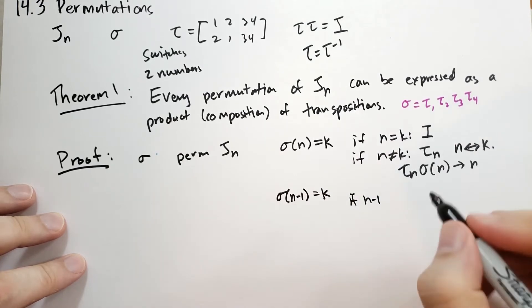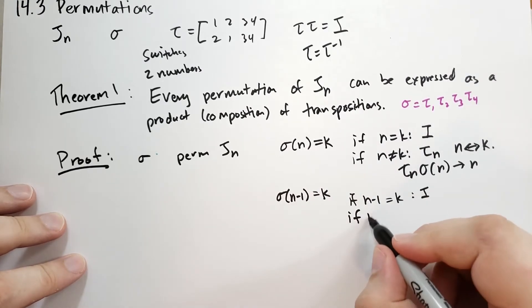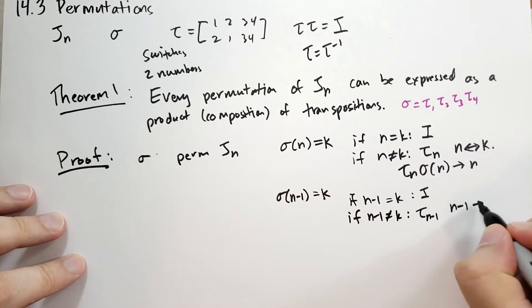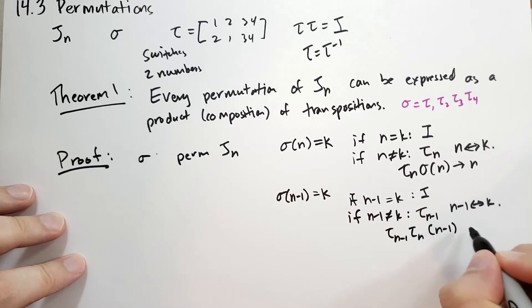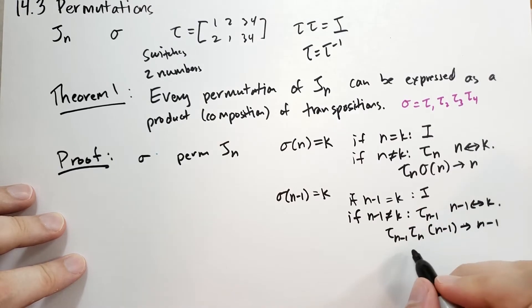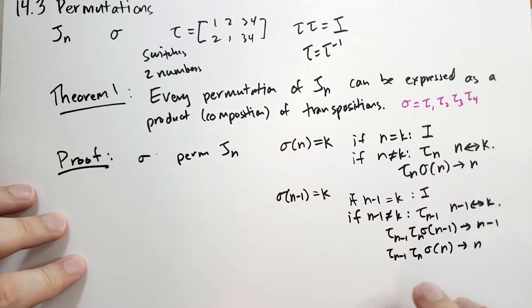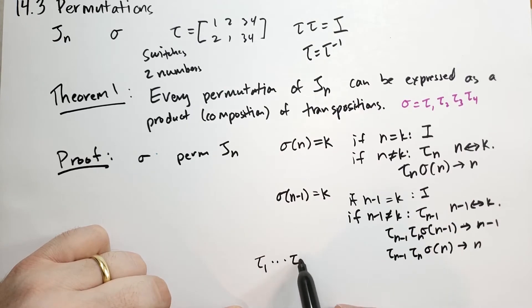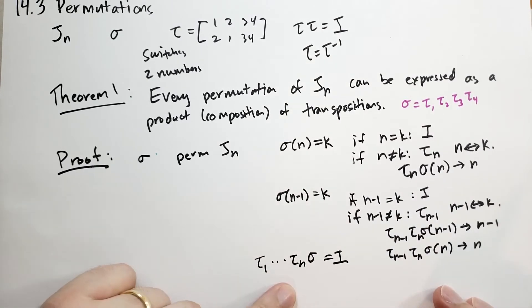So we consider: what would sigma of n minus 1 be? That's going to be some k. If n minus 1 is equal to k, those two numbers are the same, so we don't have to do anything. Otherwise, if n minus 1 is not equal to k, we're going to apply tau of n minus 1, which switches n minus 1 with k. That will give us tau_(n-1) times tau_n of n-1 gives us n-1, and also tau_(n-1) times tau_n times sigma of n gives us n. You can see we're building this up — eventually we'll get a series of taus, so tau_1 all the way up to tau_n of sigma should give us the identity.